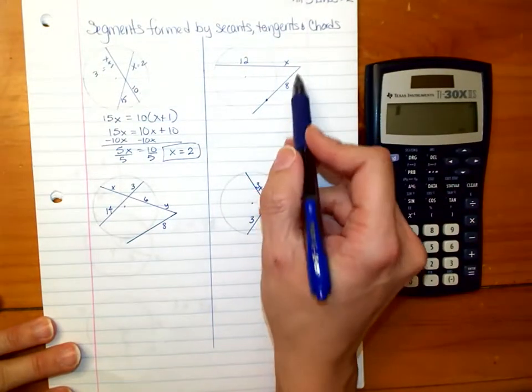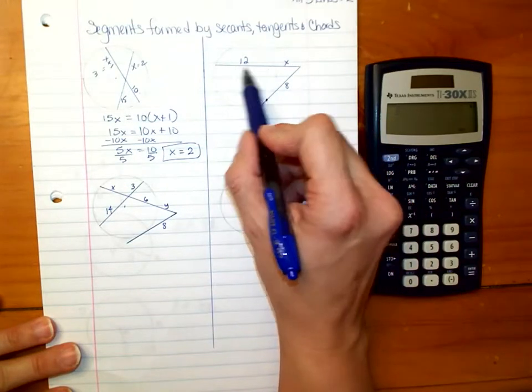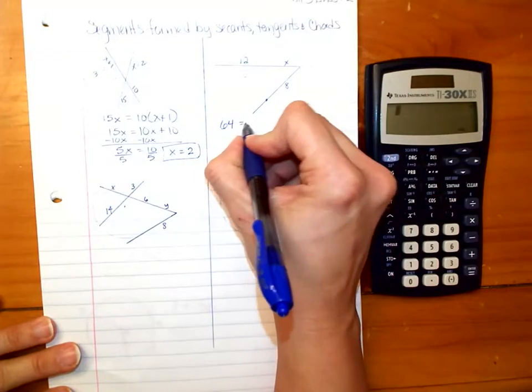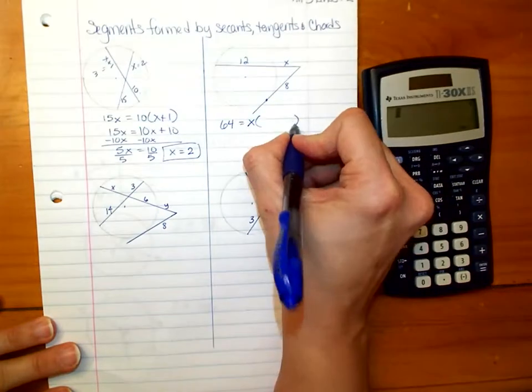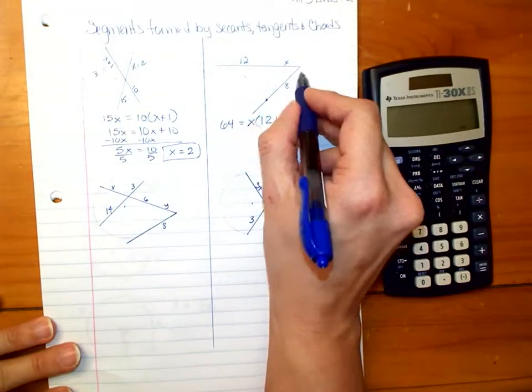Moving on to the next one, we have a tangent, so we're going to have to square that and set it equal to the whole secant times the outside part. So 64, which is 8 squared, equals X, the outside part, times the entire secant, so this plus this, 12 plus X.